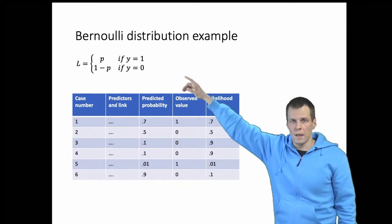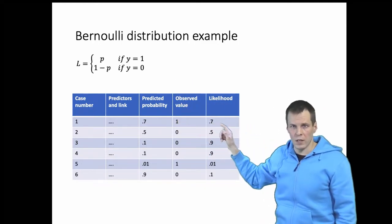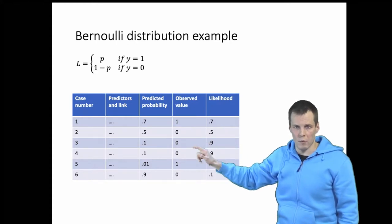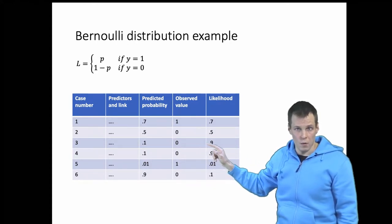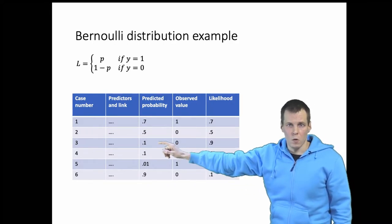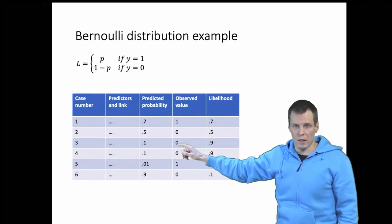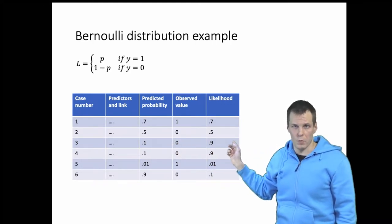So if the observed value is one then the likelihood is the predictive probability. If the observed value is zero then the likelihood is one minus the predictive probability. So if we predict 0.1 probability then it's much more likely to get the zero than one. So it's 90 percent likelihood.